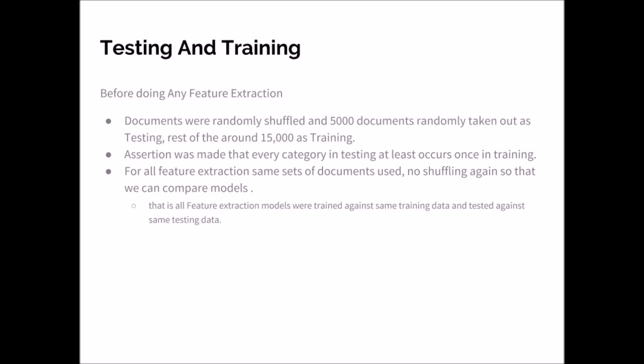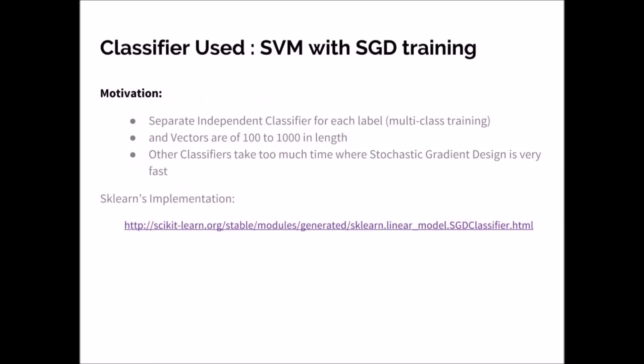Assertion was made that every category in testing at least occurs once in training. To compare different models, no shuffling was done again. Note that each document in training has multiple categories. Therefore, for each category, we build a different independent classifier which predicts whether the given document has the respective category or not.